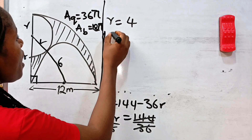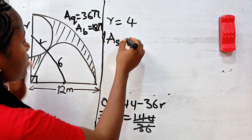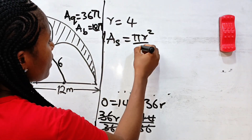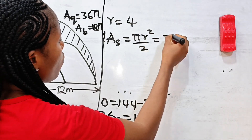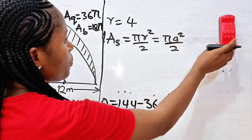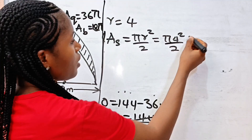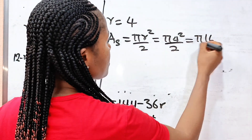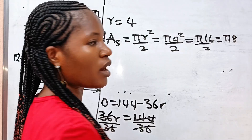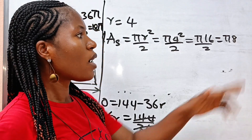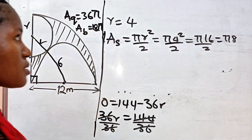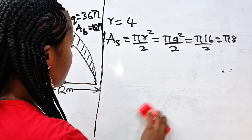Now that we have r = 4, the area of the smaller semicircle is πr²/2 = π × 4² / 2 = π × 16 / 2 = 8π square meters.